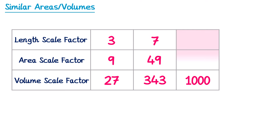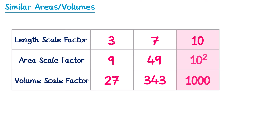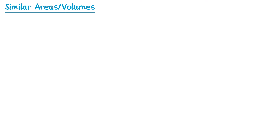For the final column we only know the volume scale factor. Since volume is the cube of the length scale factor, we go backwards by doing the cube root. The cube root of 1000 is 10, giving us the length scale factor. We then find the area scale factor by squaring this: 10 squared is 100. And that's the table complete. Now that you understand how the scale factors work, you're ready to use this information to find missing lengths, areas, or volumes in shapes.